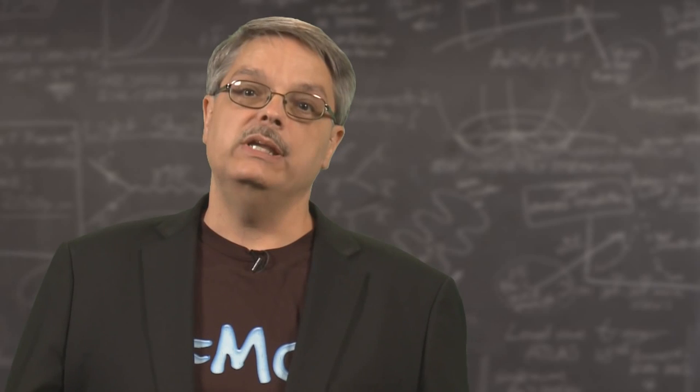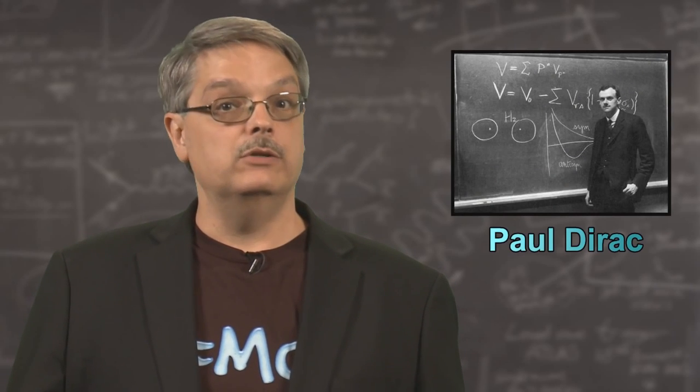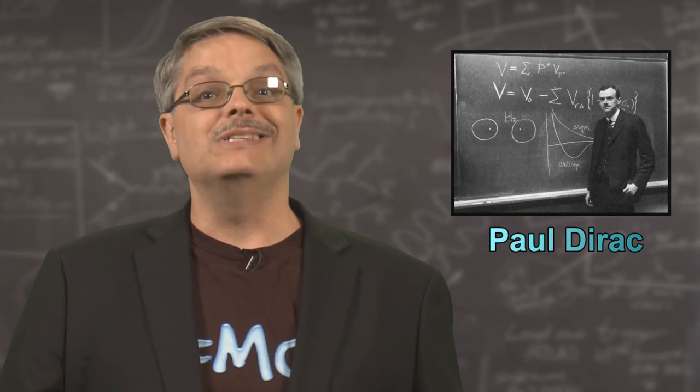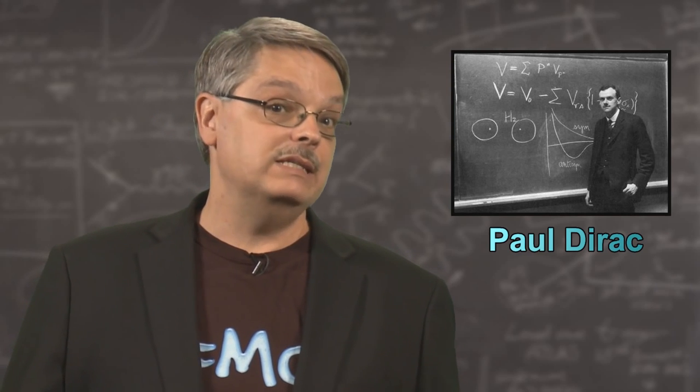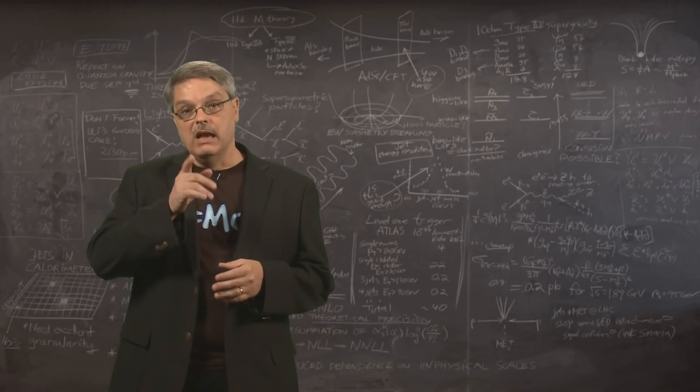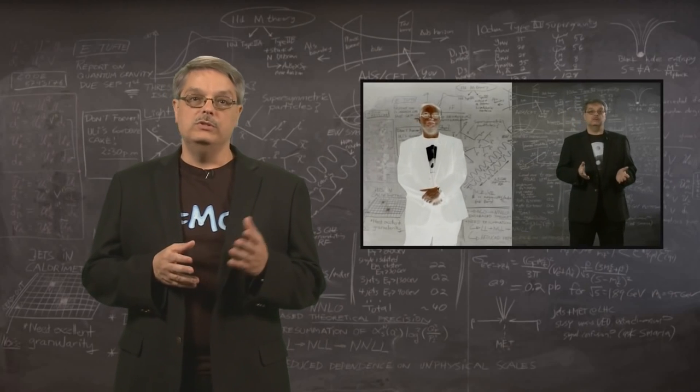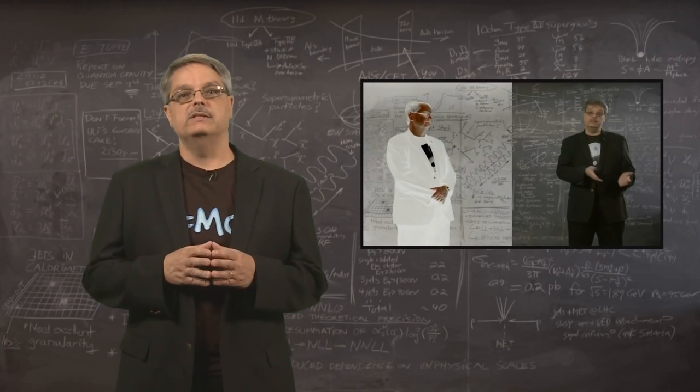In 1928, physicist Paul Dirac realized that not only were energy and matter equivalent, but there existed another substance called antimatter. I've talked about antimatter in another video, which you can watch for more information. However, I'll give you the highlights here.